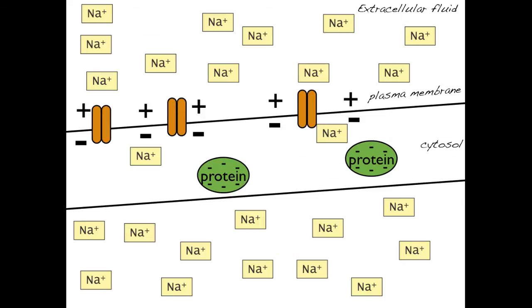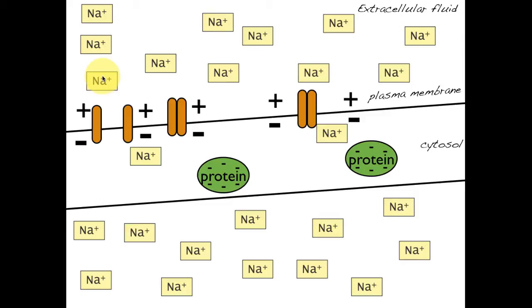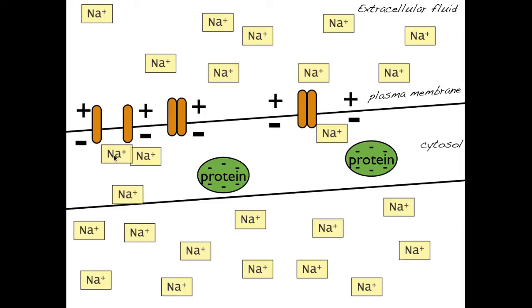Let's now just look at the sodium. These brown shapes here are going to denote sodium channels. In response to a stimulus, sodium channels will open up. Sodium can move from an area of high concentration down its concentration gradient to an area of low concentration. Normally, the plasma membrane is impermeable to sodium, so sodium will move down its concentration gradient into the cell. This will cause what's called a depolarization, so that inside the cell is now more positively charged than outside because lots of sodium has rushed in.